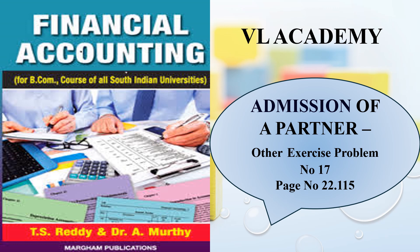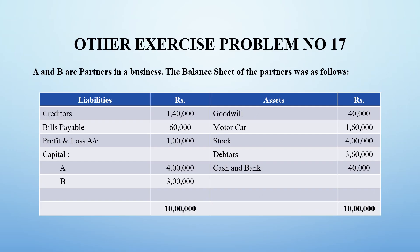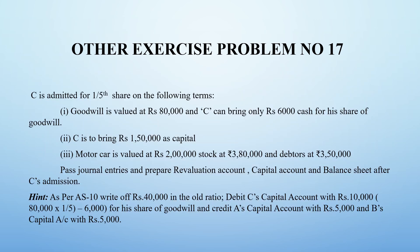Welcome to VL Academy. In this video, we cover admission of a partner — exercise problem number 17, which is on page number 22.115. A and B are partners. C has entered into the business with the following terms: C has entered into the business, and that goodwill is worth 40,000 rupees.